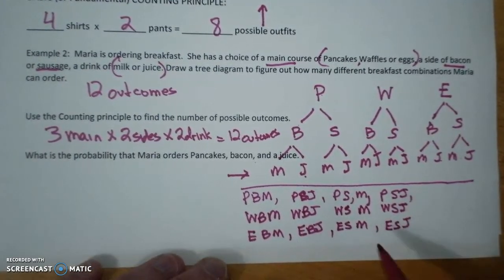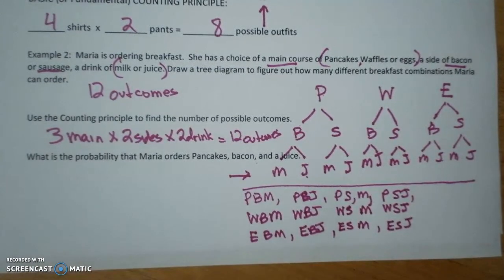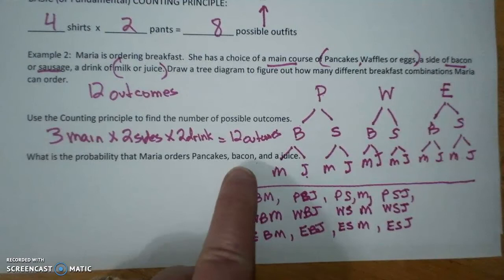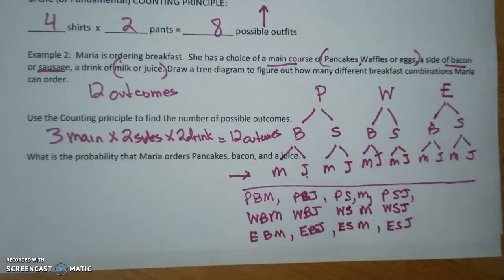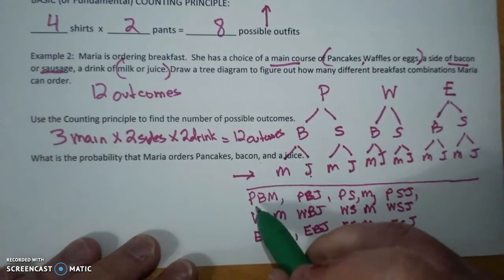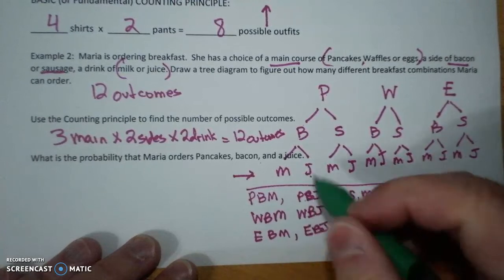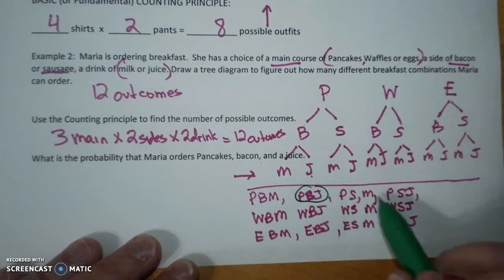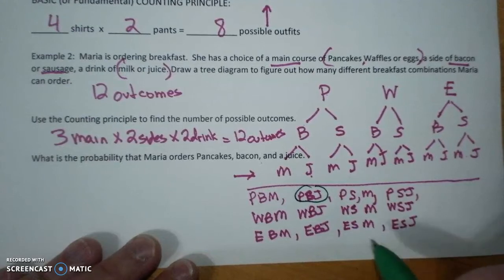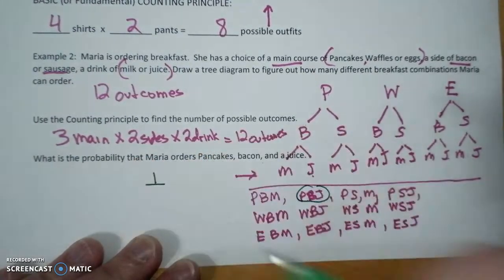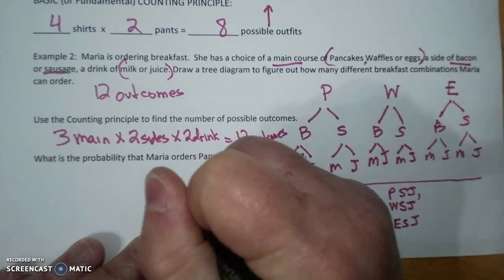What is the probability Maria orders pancakes, bacon, and juice. So I'm looking for a pancake, bacon, and juice. There's a pancake, bacon, and juice. 1, that's my yes, total is 12.